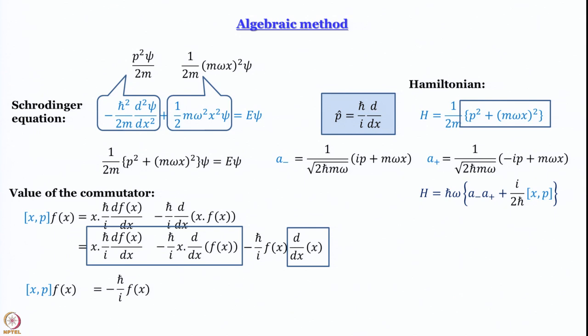So the commutator of x and p acting on f(x) gives −ℏ/i · f(x), which means [x, p] = −ℏ/i = iℏ. This is a very fundamental relationship that comes up in many applications of quantum mechanics.